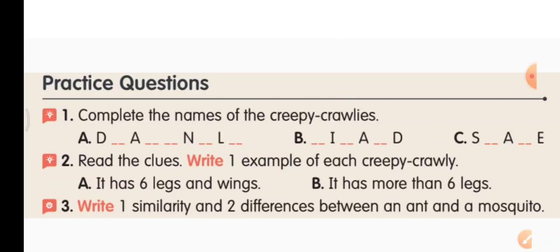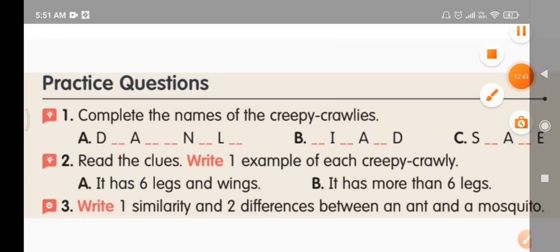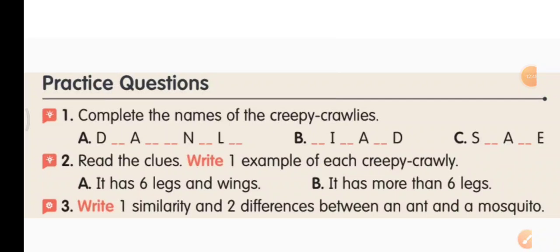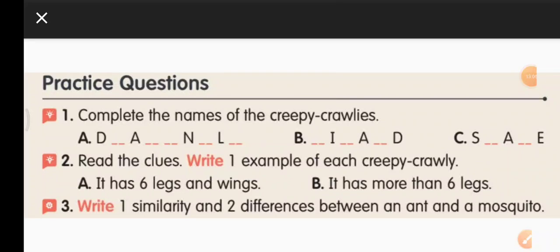Third question: write one similarity and two differences between an ant and a mosquito. Similarity — both ant and mosquito are small in size. Differences — ant moves on the ground whereas mosquito flies; ant has legs only, mosquito has legs and wings.